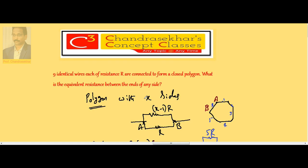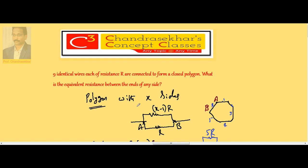General case: polygon with X sides, one side resistance becomes R, the other side becomes X minus 1 into R.